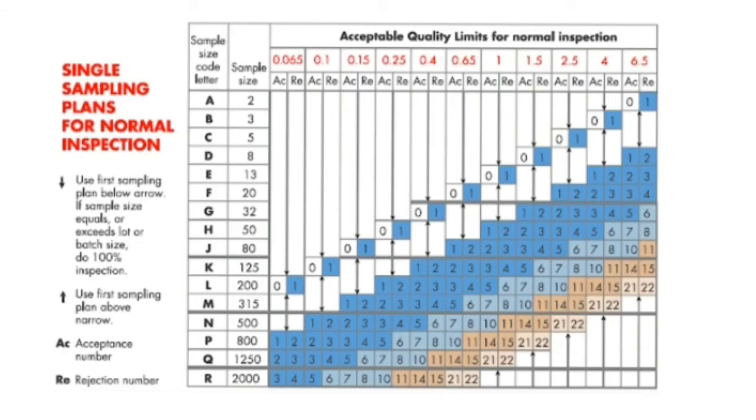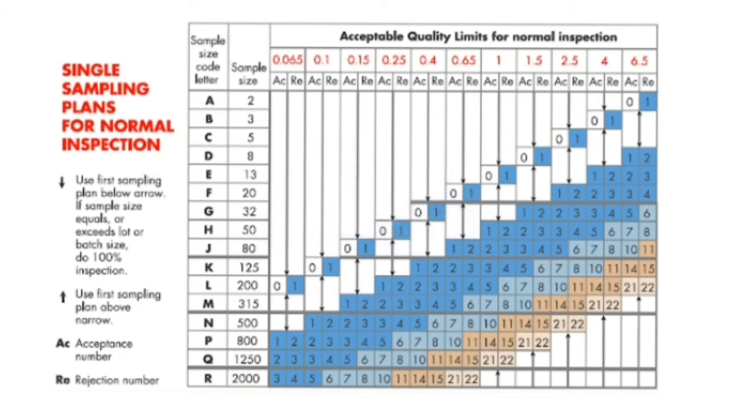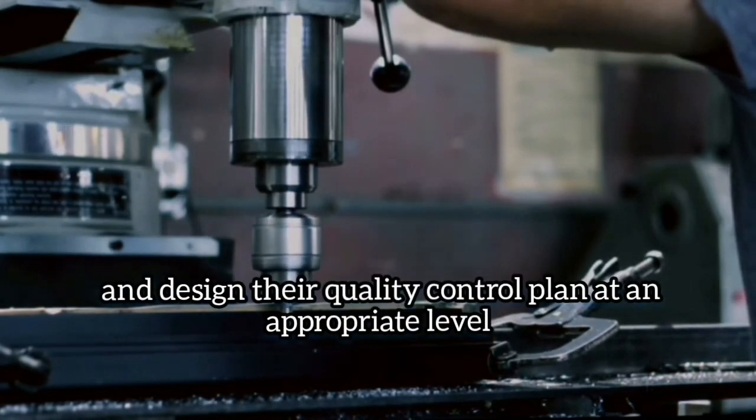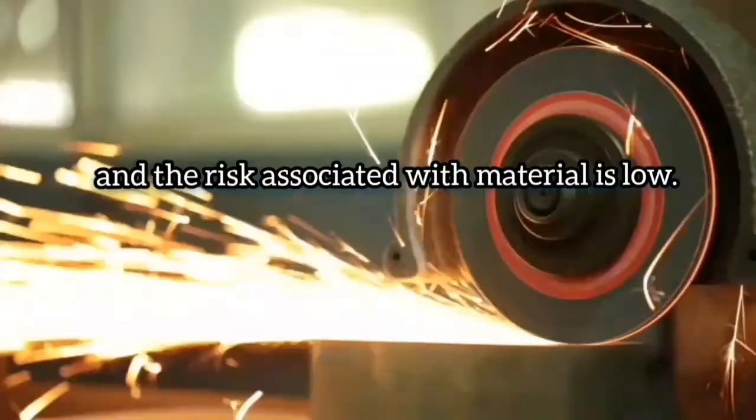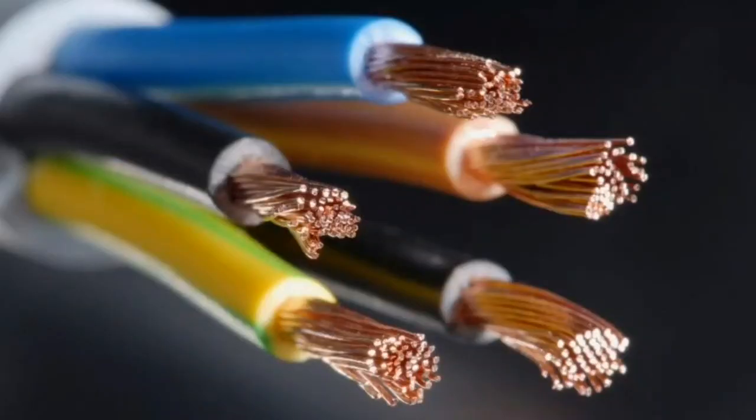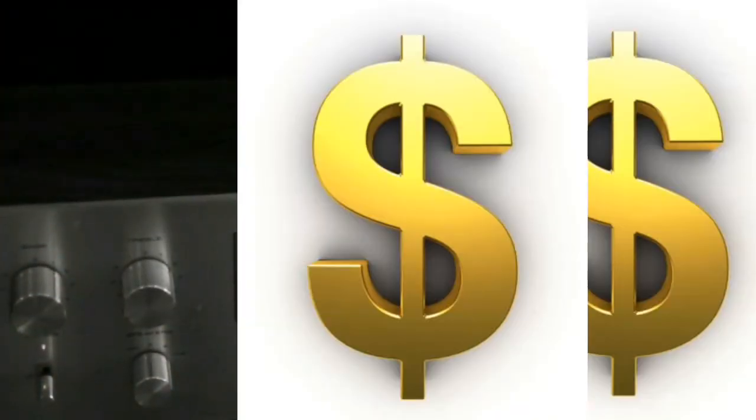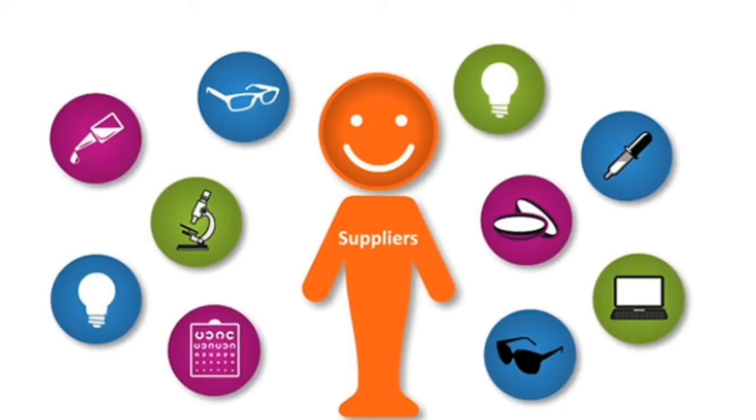This should be mentioned that depending on risk classes and acceptance quality limits, AQL, of suppliers and their materials, companies should take a decision and design their quality control plan at an appropriate level and not all the tests are done. The risk associated with material is low. By strategically designing your testing and inspection you can not only save money but also work upon supplier and your own process optimization.